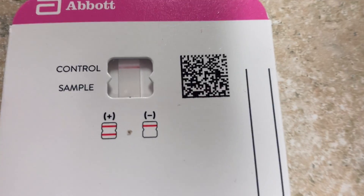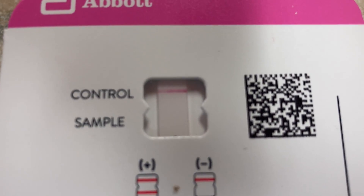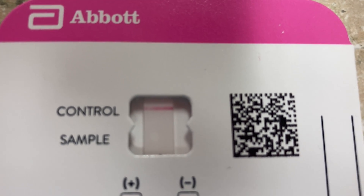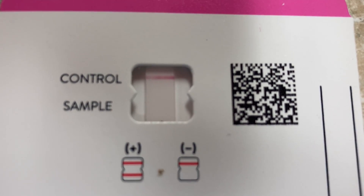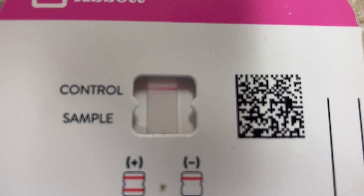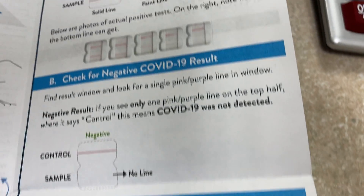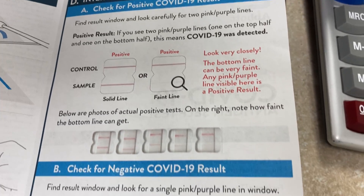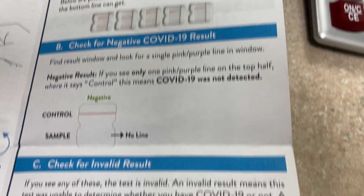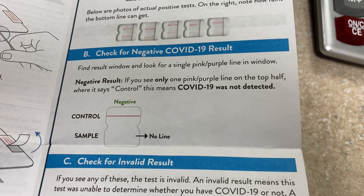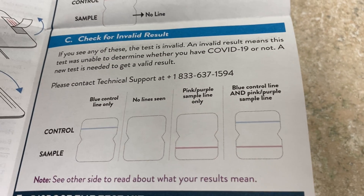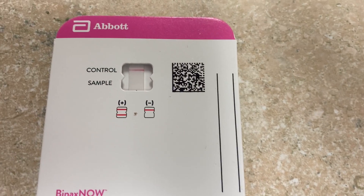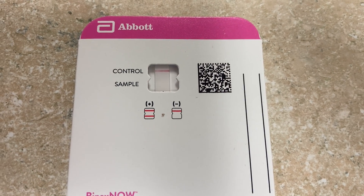Okay, it's 15 minutes, so this is the result. I see one line — a bright line on the control and nothing on the sample, so I would conclude this is a negative test, which is great. They do give you some information about interpretation of the results: those are the positive ones, those are the negative, and those are the inconclusive or invalid tests. So my sample came up negative, which is fine with me.